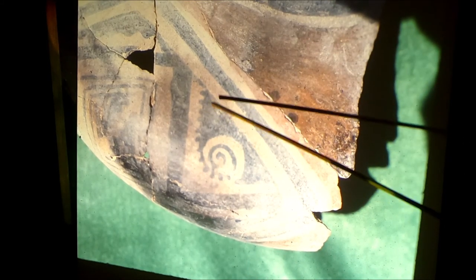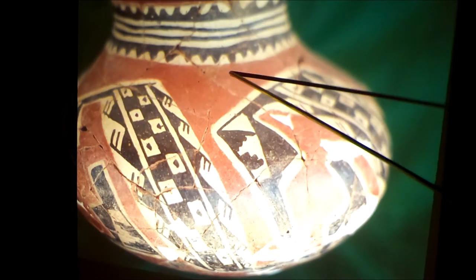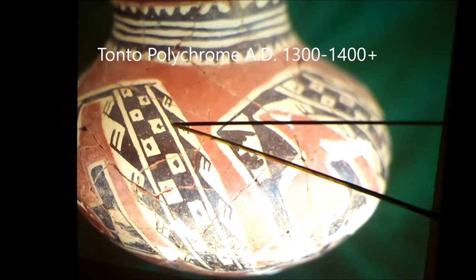Actually, Tonto Polychrome. There's a curly wind and water dots. That's a cloud element. Here's a big Tonto vessel. Now, this one's fun. This one is actually - these are clouds. These are rain.